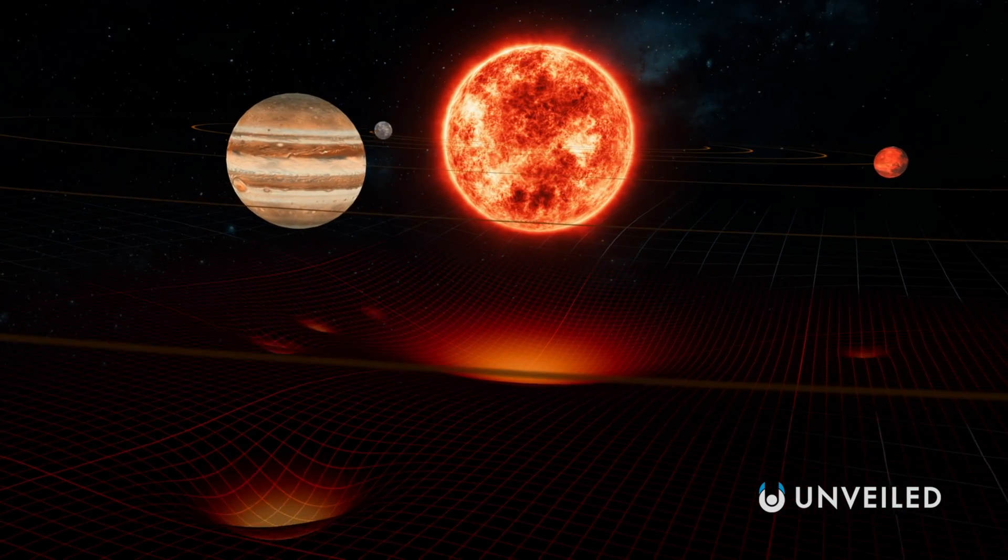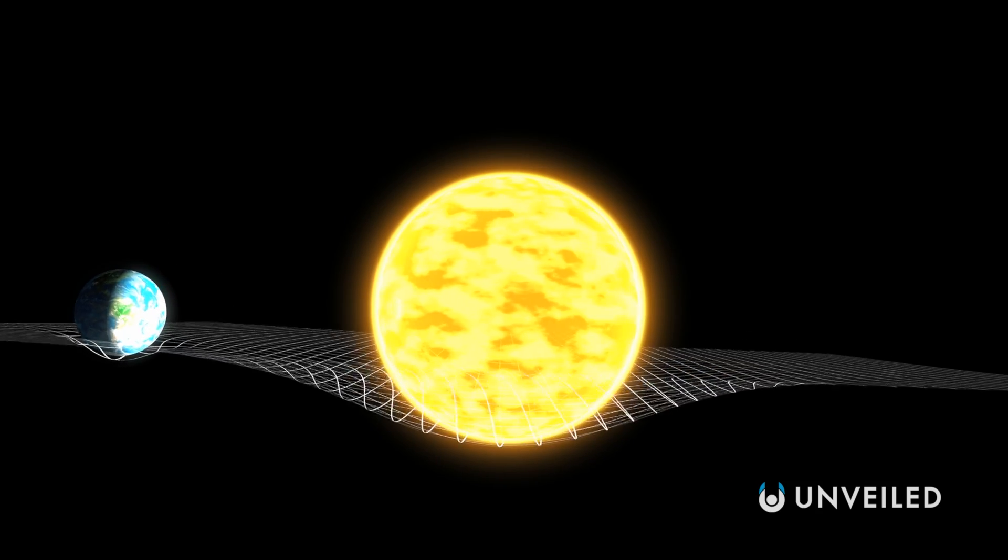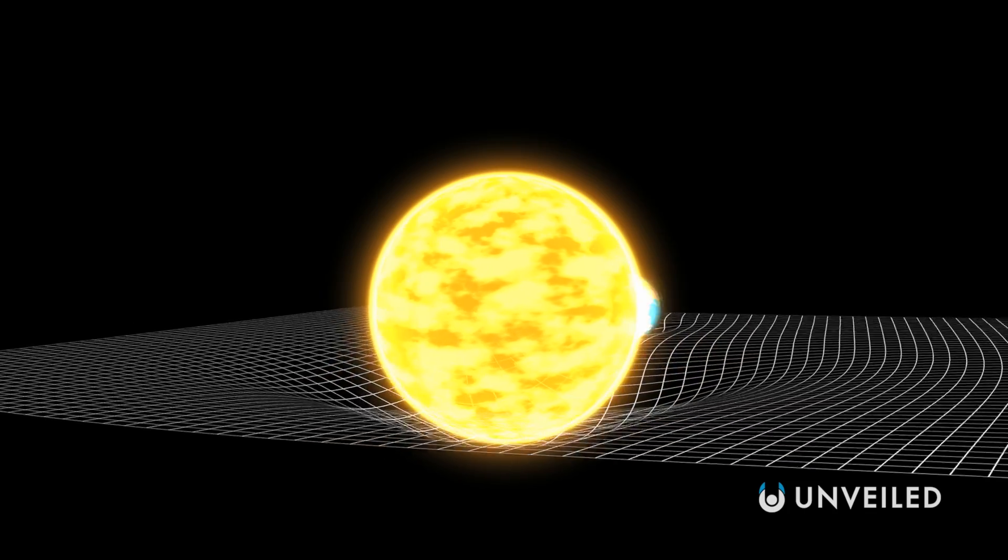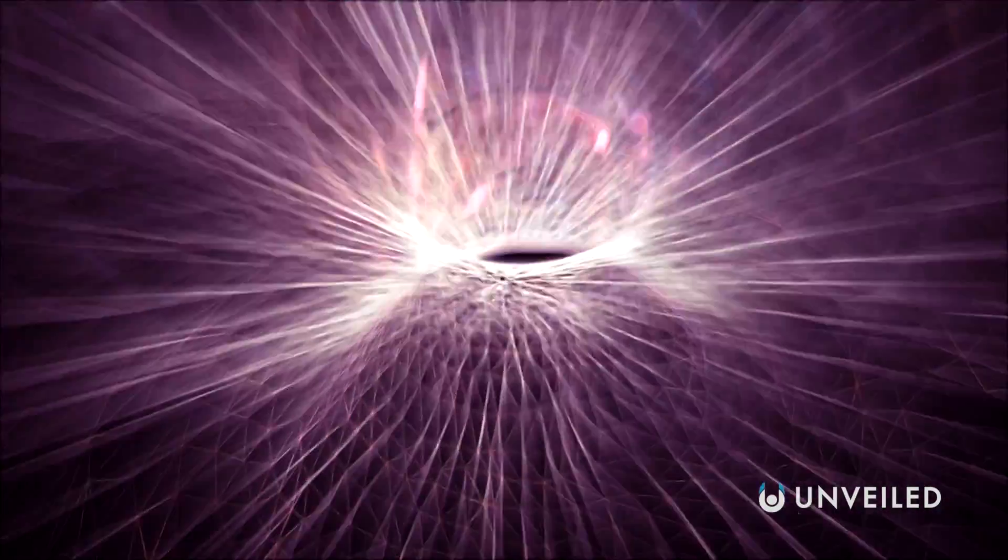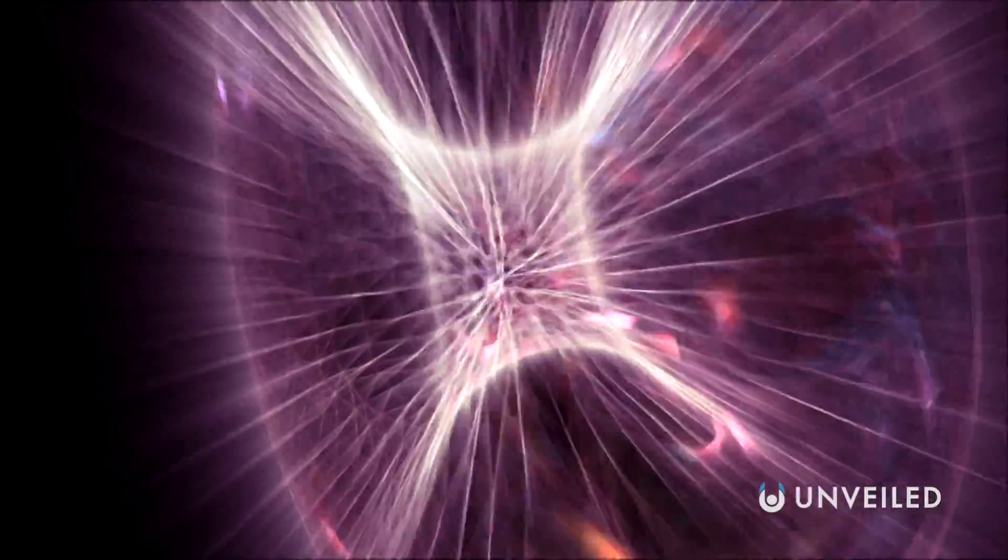General relativity unifies them into one mathematical model, explaining that they're both components of a singular four-dimensional continuum. Einstein aptly named this space-time, and deduced that gravity arises as a result of the warping of space-time due to mass.